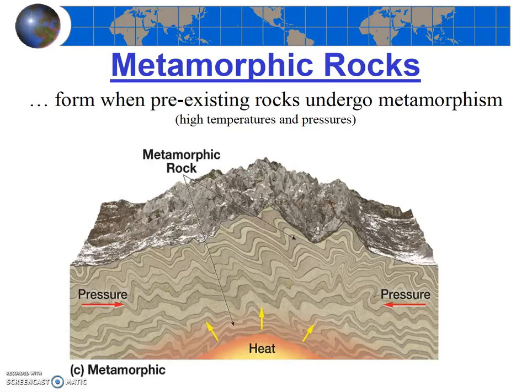The last of our three rock types is metamorphic rocks, and these rocks form in a different manner from both the igneous and sedimentary rocks. Metamorphic rocks form when pre-existing rocks undergo metamorphism, which is essentially high temperatures and pressures. Notably, metamorphic rocks form from other rocks — not from magma like igneous rocks, and not from sediment like sedimentary rocks.